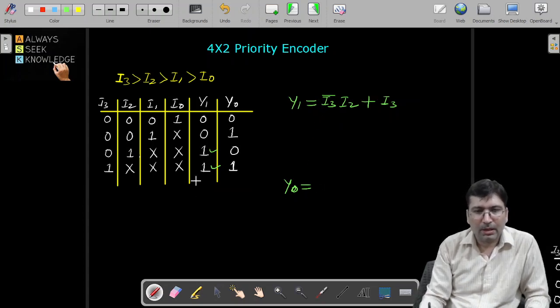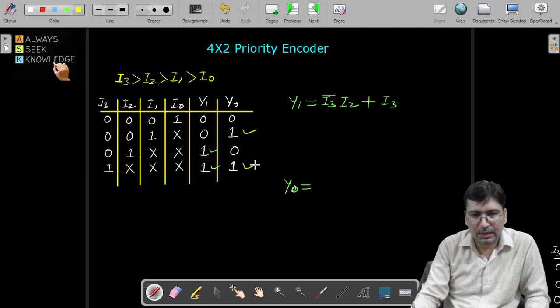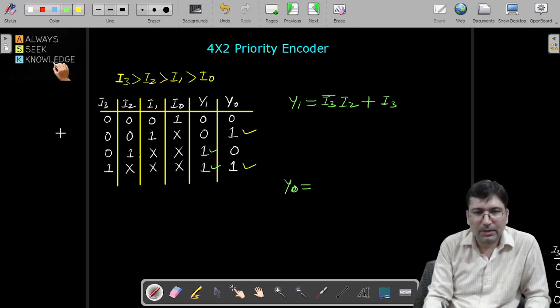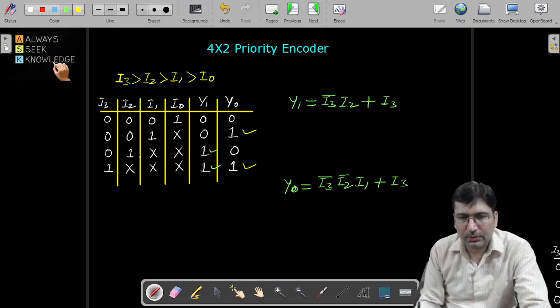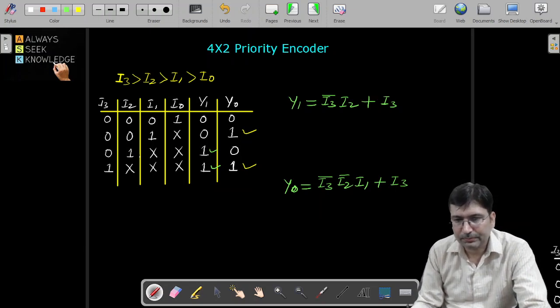Let's write for y0. If you talk about y0, it is having positive or high value at these two places. So once you write for the very first thing here, i3 bar i2 bar i1. And because this is don't care so we will not include it. Plus this second place which is i3. So this will represent the expression of these two outputs.